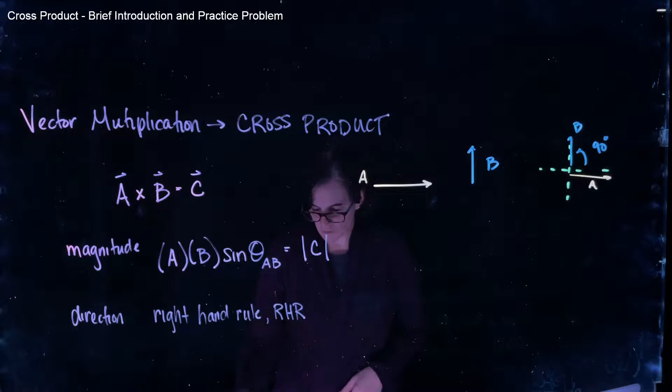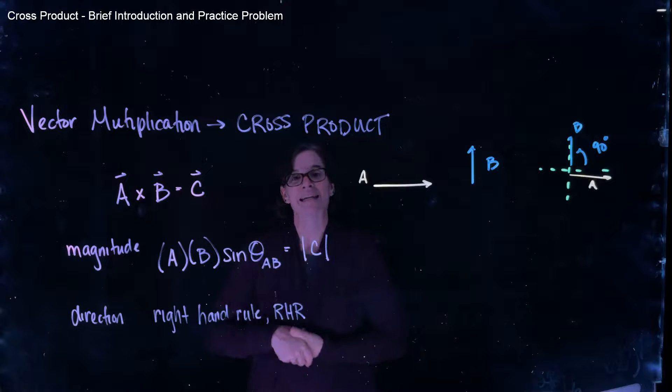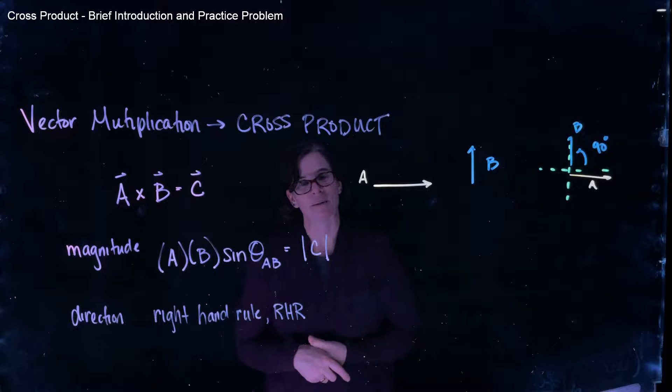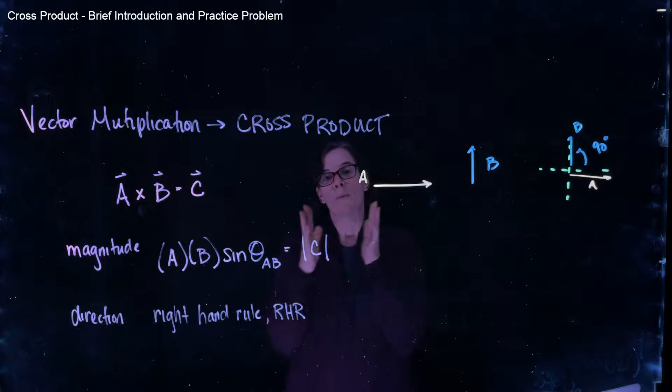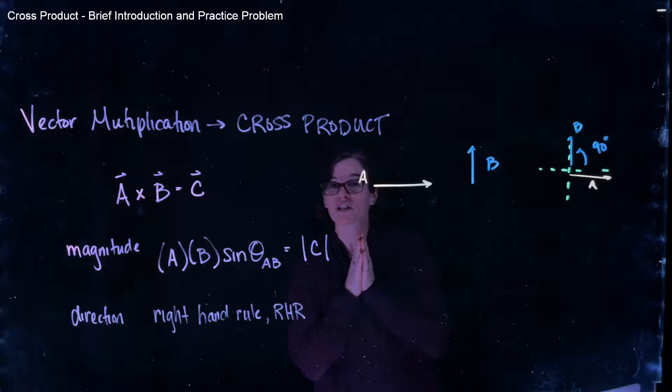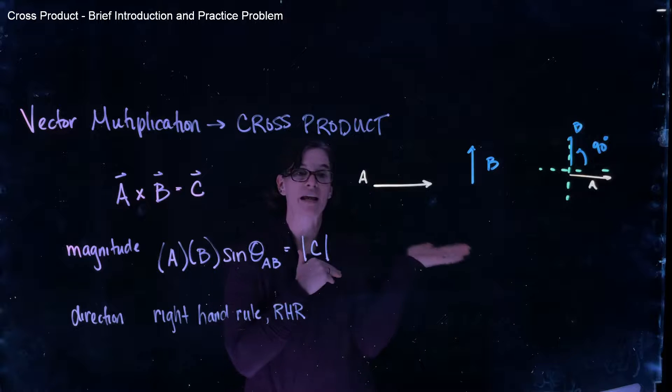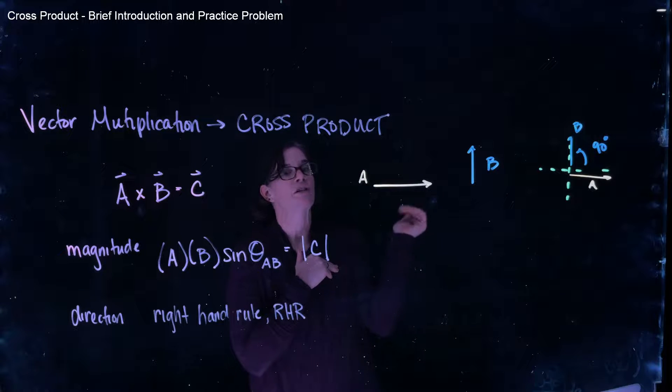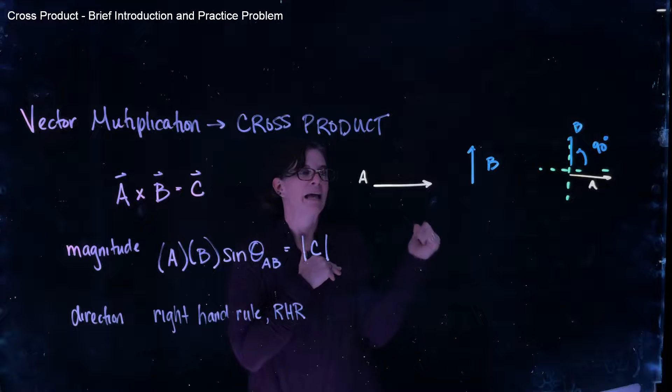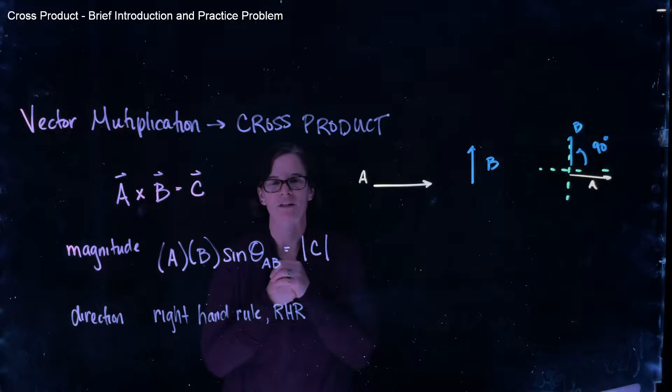I tend to use that third method to find my direction in my right hand rule. Pointing my fingers in the direction of my initial vector, that's important. So in this case, vector A. Pointing my fingers in the direction of B. And my thumb will point in the resultant vector.